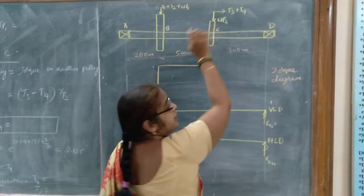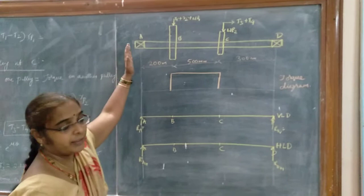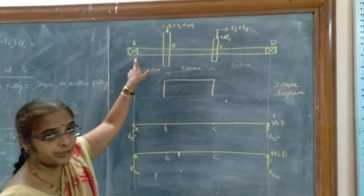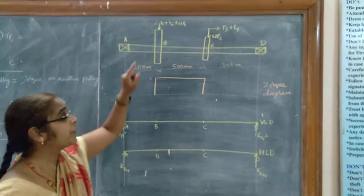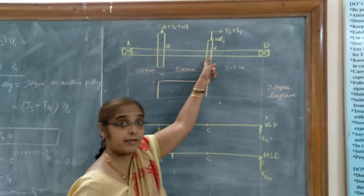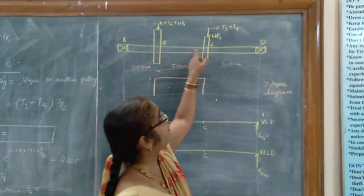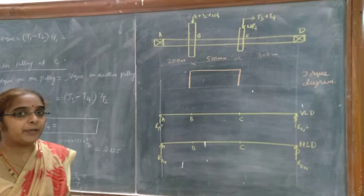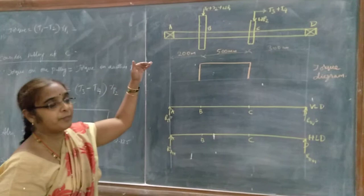The motor drives this pulley with the help of a horizontal belt. So, the shaft is mounted between the two bearings A and D, and this shaft is mounted with two pulleys at B and at C. This pulley drives another pulley below it, and this pulley is driven by the motor mounted to the right side via a horizontal belt. Now we need to find the diameter of the shaft.